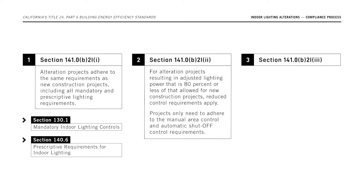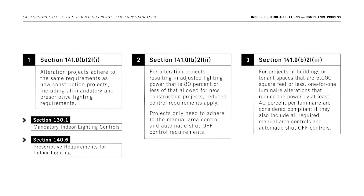Option 3: For projects in buildings or tenant spaces that are 5,000 square feet or less, one-for-one luminaire alterations that reduce the power by at least 40% per luminaire are considered compliant if they also include all required manual area controls and automatic shutoff controls.